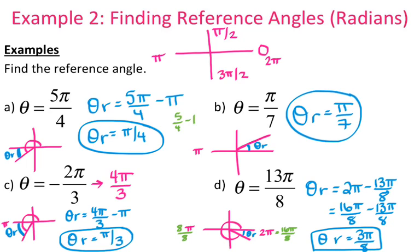Just like your reference angle in degrees has to be acute — less than 90 degrees — your reference angle in radians has to be less than pi over 2, because pi over 2 is the same thing as 90 degrees. Alright, that concludes your lesson on reference angles.